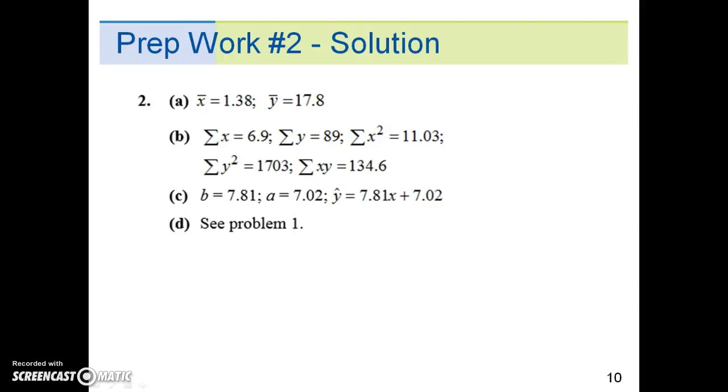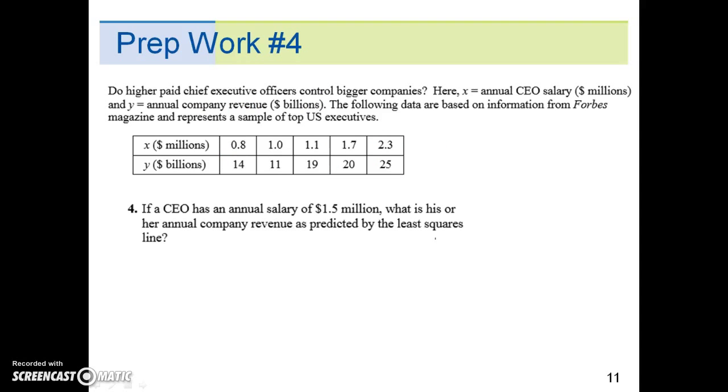Here's the solution for prep work number 2. Prep work number 4 has the same data and starting information as prep work number 1, 2, and 3. And number 4: if a CEO has an annual salary of $1.5 million, what is his or her annual company revenue as predicted by the least squares line?